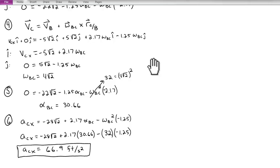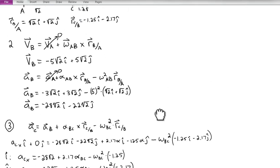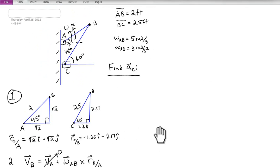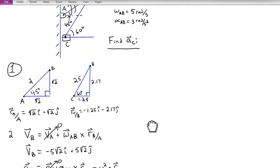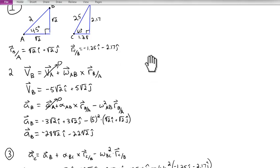To recap what we did in this problem, we started by looking at the geometry of the problem. We were given omega_AB and alpha_AB. This enabled us to use the relative velocity equation to find the velocity at B and the acceleration at B.